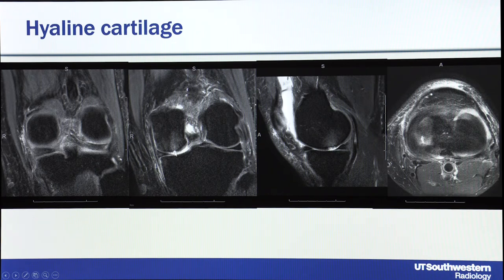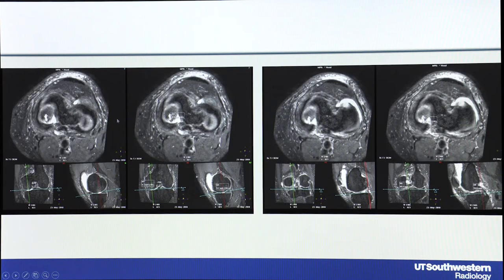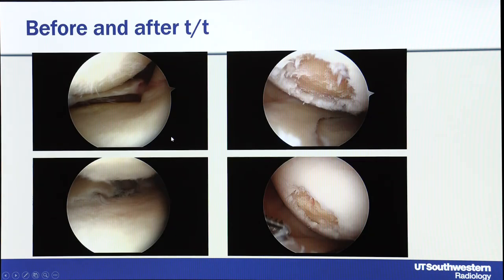You can also assess hyaline cartilage. Comparing 2D and 3D: on 2D there is a grade 4 defect with bone marrow edema; on 3D it's much sharper — a well-shouldered defect that is quite big with obtuse angles suggesting degeneration. Reconstructing in three planes allows measurement of the cartilage defect extent — the so-called puddle sign — and you can measure the defect.